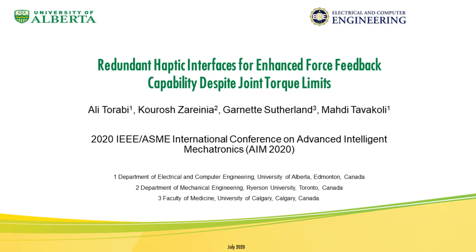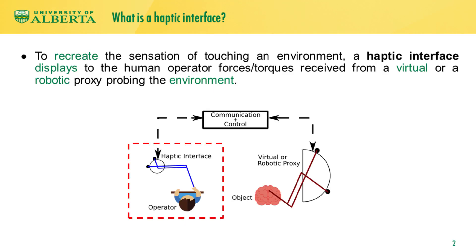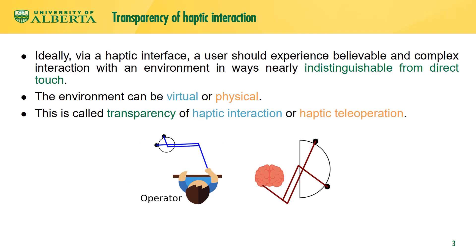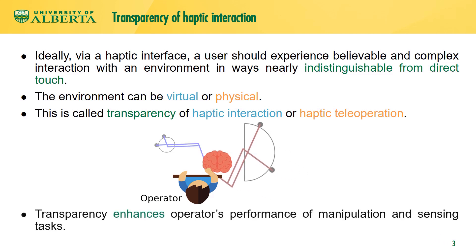Redundant haptic interfaces for enhanced force feedback capability despite joint torque limits. To recreate the sensation of touching an environment, a haptic interface displays to the human operator forces received from a virtual environment or a robotic proxy probing a physical environment. Ideally, via a haptic interface, a user should experience believable and complex interaction with an environment in ways nearly indistinguishable from direct touch. The environment can be virtual or physical. This is called transparency of haptic interaction or haptic teleoperation. Transparency enhances operators' performance of manipulation and sensing tasks.